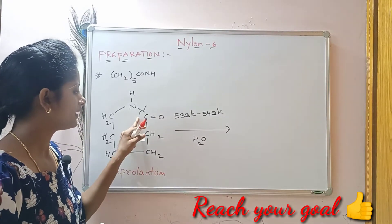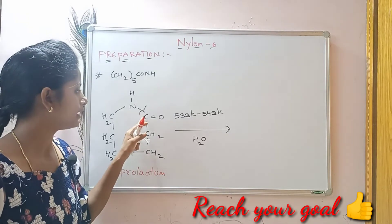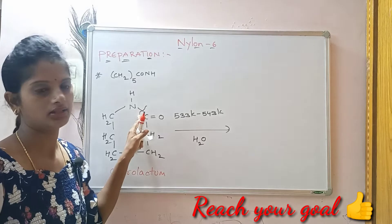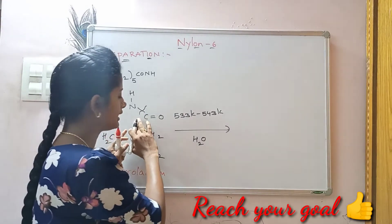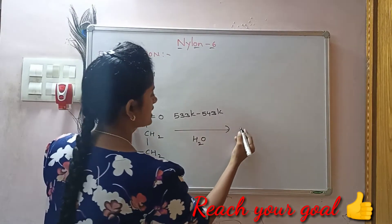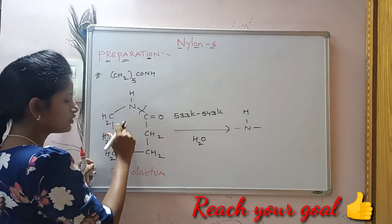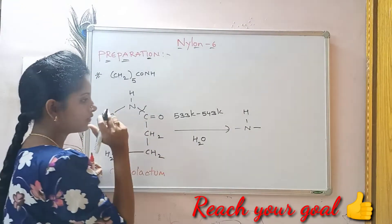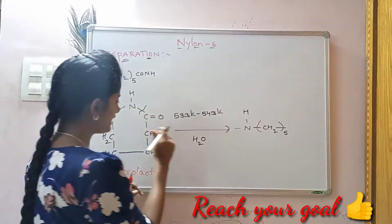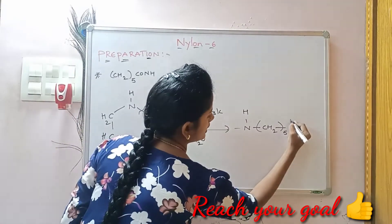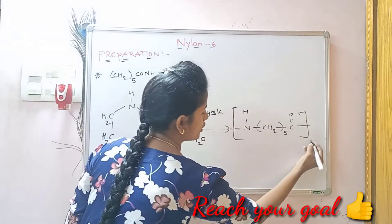When heated at high temperature, the bond between C=O and NH will break, and the ring chain will get open. The opened chain has the structure: NH — (CH₂)₅ — C=O. This is the repeating unit structure of Nylon 6.